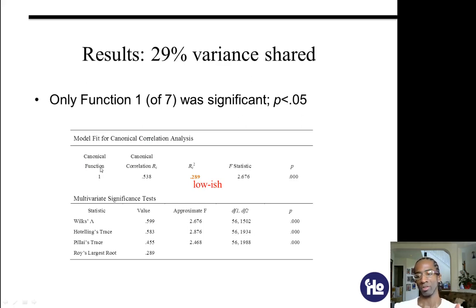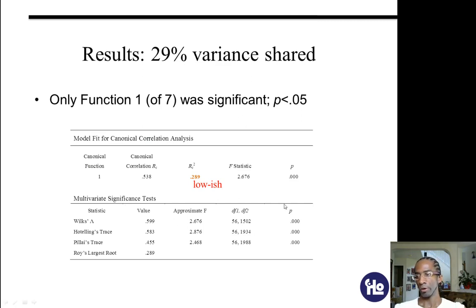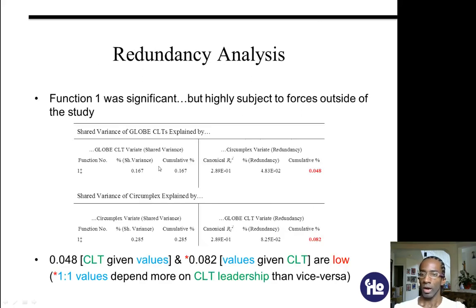Different canonical functions show you different aspects of the relationship — canonical function 1 compares offense to defense, canonical function 2 compares defense to offense, and so on. For your multivariate significance test you can use Wilks' lambda, Hotelling's trace, Pillai's trace, Roy's largest root, and you can see that all of those multivariate significance tests were in fact significant at the p = 0.05 level and beyond.